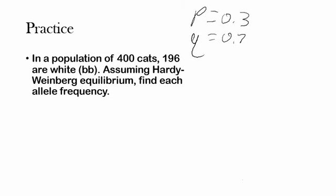Let's solve this. There are a couple basic techniques we're going to use whenever we solve Hardy-Weinberg questions. We're going to be looking for one of three things: Q squared, P, or Q. With one of these three things we can find any of the other quantities in our Hardy-Weinberg equations. These three are easy to isolate and manipulate, rather than 2PQ, which is the heterozygous genotype frequency, or P squared plus 2PQ, which is the frequency of the dominant phenotype.